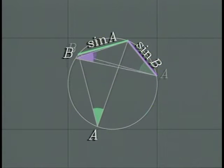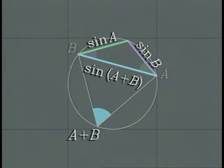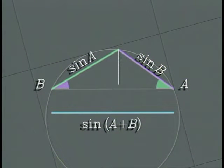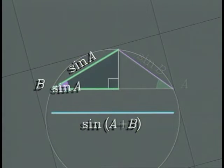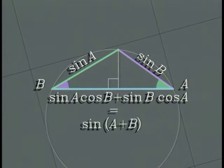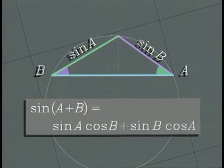Now bring the two angles together at a common vertex. They form a larger angle, A plus B, that cuts off a chord whose length is the sine of A plus B. To find the length of this chord another way, drop a perpendicular to the chord. It divides the triangle into two right triangles. The base of this right triangle is its hypotenuse times cosine B. The base of this one is its hypotenuse times cosine A. Putting these together gives the addition formula for sines: the sine of A plus B is equal to sine A times cosine B plus sine B times cosine A.